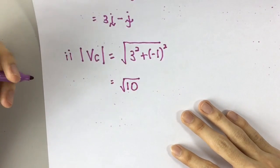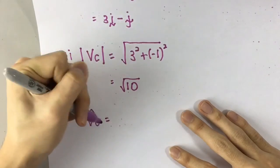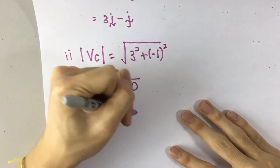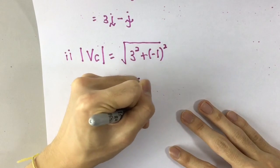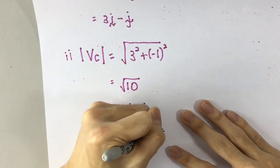Now that you have that, you can use that to find the unit vector, which is Vc. So, the vector of Vc is 3I minus J divided by the magnitude, which is square root of 10. This is your answer.